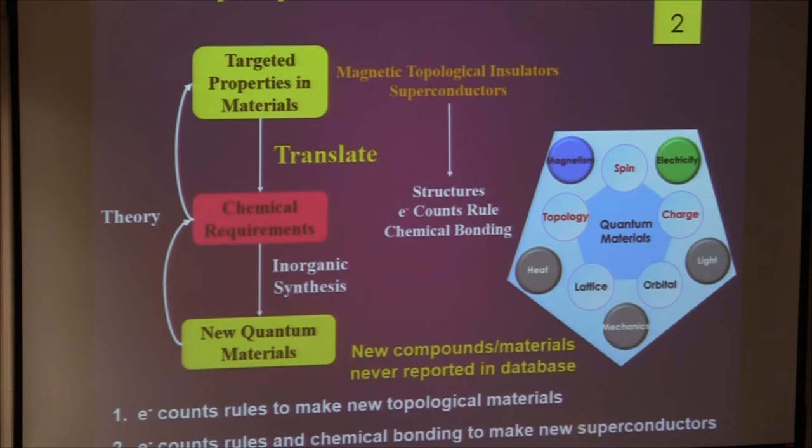For physics, the goal is to make new materials and find interesting or new physical phenomena and try to understand them. For chemistry, our goal is also very straightforward: we try to make new compounds or new materials which have never been reported in the database. We are coming from nothing.